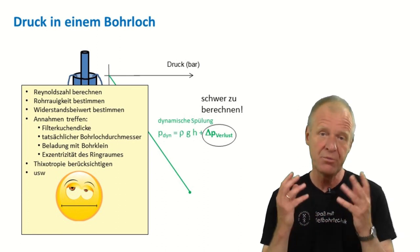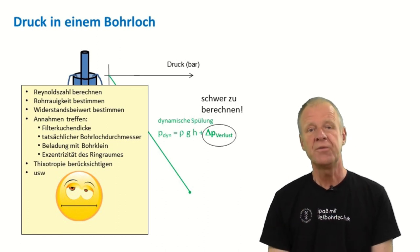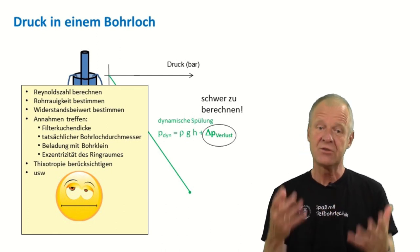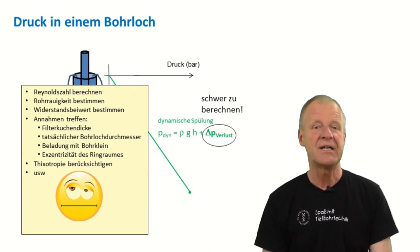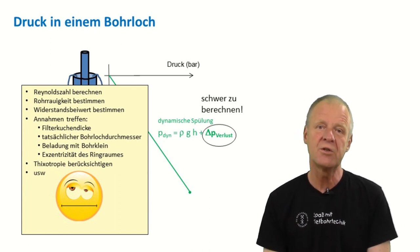Concentration of the drill cuttings, and finally, you must take account the thixotropy of the drilling mud and rheological properties of the mud. All this is pretty complicated. So, calculating dynamic pressure loss is quite a challenge.